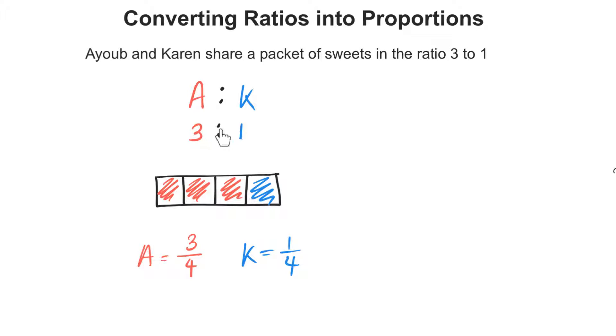Now, every ratio can be expressed as proportions. All you need to do to express it as a proportion is remember that the denominator of the proportion is just the sum of the ratio amounts. 3 plus 1 is 4, so the denominator is 4. And then you write the ratio amount over the denominator.